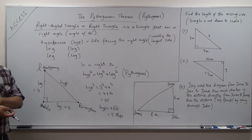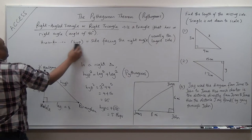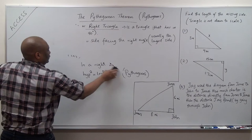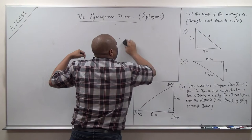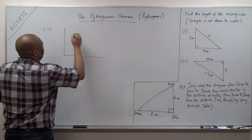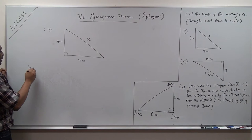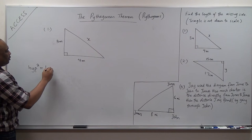Let's go ahead and solve these questions. Question one: we have three meters here, four meters here, and you want to find X. You can see this is a right triangle. The first thing you write is the Pythagorean theorem: hypotenuse squared equals leg squared plus leg squared.